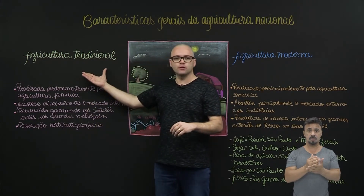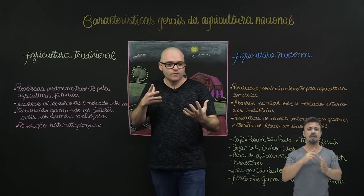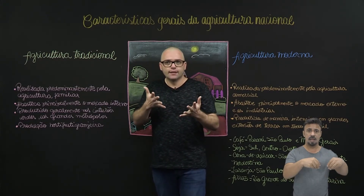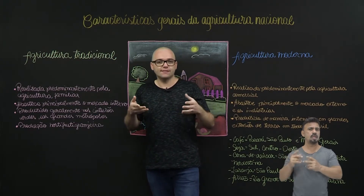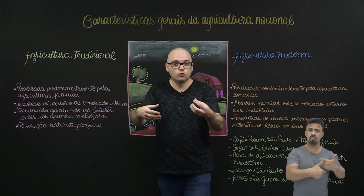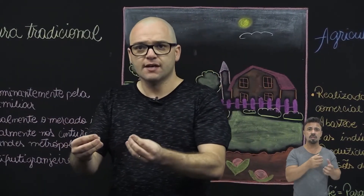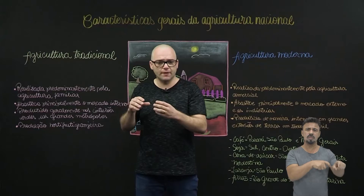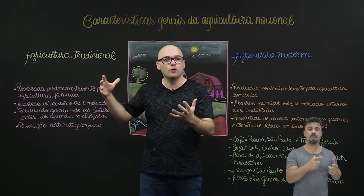Vamos começar com a agricultura tradicional. A agricultura tradicional brasileira, como todas as outras, vai estar sempre focada na produção com pouca tecnologia. A produtividade da terra não é tão grande se comparada à agricultura moderna. Toda essa mão de obra vai ser pautada principalmente nas famílias, na utilização da produção familiar, agricultura familiar, agricultura de subsistência, agricultura de pequenas cooperativas que vão gerar riqueza para pequenas propriedades rurais.